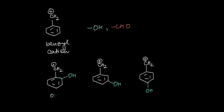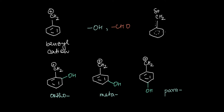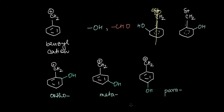We have special names for each of these positions: ortho, meta, and para. A quick note: it doesn't really matter in which direction I put the OH group — towards my right or towards my left — both are ortho, because in a benzene ring the pi electrons are in resonance. A more realistic picture of the benzyl cation has a partial double bond distributed throughout the ring, so the orientation of the OH group doesn't matter.